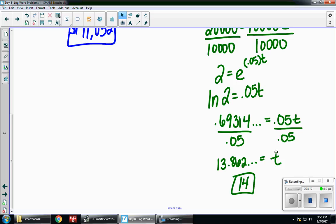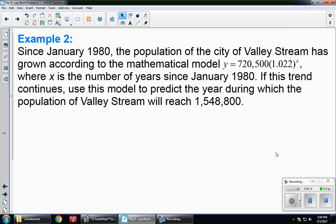Let's take a look at another example. Since January 1980, the population of the city of Valley Stream has grown according to the mathematical model Y = 720,500 × 1.022^x, where x is the number of years since January 1980. If this trend continues, use this model to predict the year during which the population of Valley Stream will reach 1,548,800.